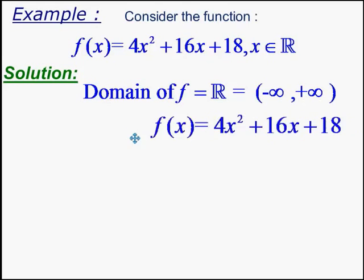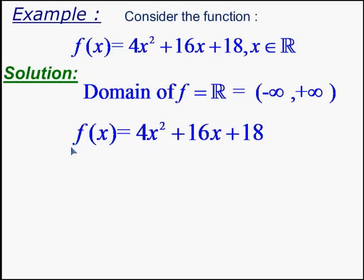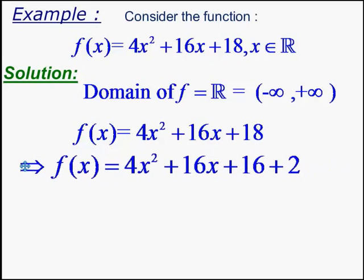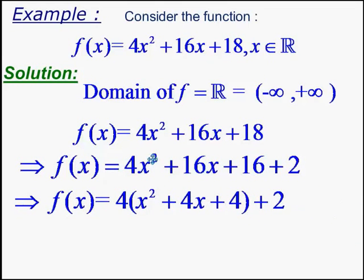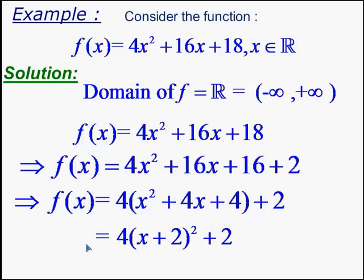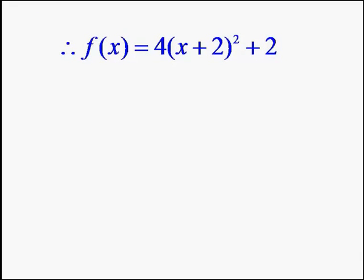The function f can be rewritten to make it convenient for us to decide the maximum or minimum values. So this can be rewritten as 4x² + 16x + 16 + 2, where 16 + 2 is 18. Taking 4 common from the first three terms, we get 4 times (x² + 4x + 4) + 2. This expression is nothing but 4 times (x + 2)² + 2.